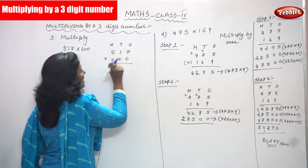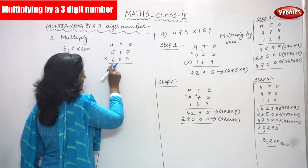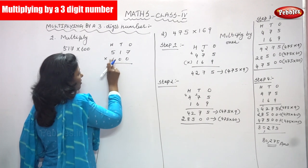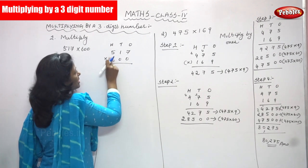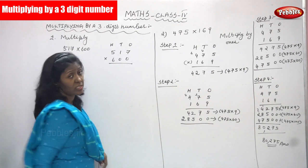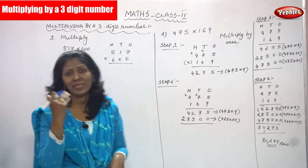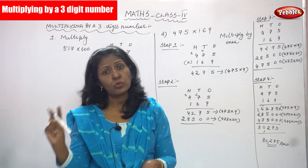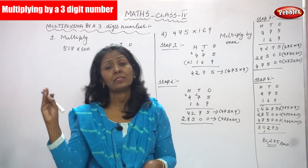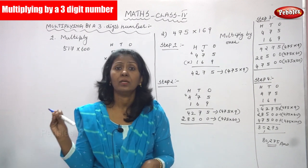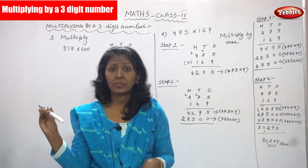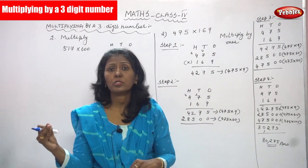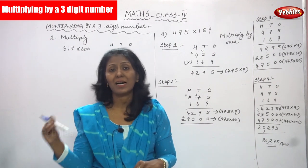6 is going to multiply by 517 — that is, 6 is in the 100's place value of 600. Then you will get the answer. And finally, how many zeros are in 600? There are two zeros. Add the two zeros at the end of the answer.